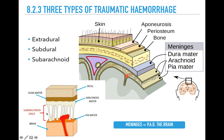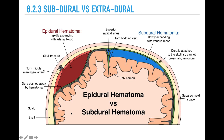These diagrams show the same thing: extradural is between the skull and dura, subdural is between the dura and arachnoid, and subarachnoid is in the subarachnoid space. Note that epidural is another name for extradural - don't get confused, they are the same thing. The green layer represents the dura. A bleed in the extradural space is usually arterial, peeling off the dura, and is typically an arterial bleed.